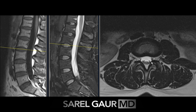I'm looking at the thecal sac, which is the fluid-filled sac that contains the cauda equina nerve roots. It should have a round configuration. I'm looking for any narrowing of the central canal region, and looking for anything else that will cause narrowing, such as ligamentum flavum hypertrophy or facet enlargement. I'm also looking at the epidural fat to see if it's impinging on the central canal and causing stenosis.